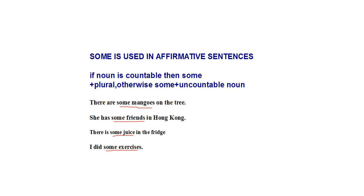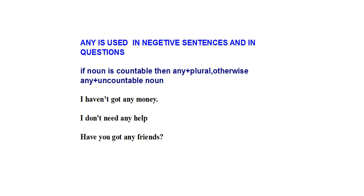So 'some' is used in positive sentences — if the noun is countable, some plus plural countable noun; if uncountable, some plus uncountable noun. Now, 'any' is used in negative sentences and questions. The rule is the same for countable and uncountable nouns: if countable, any plus plural; if uncountable, any plus uncountable noun.